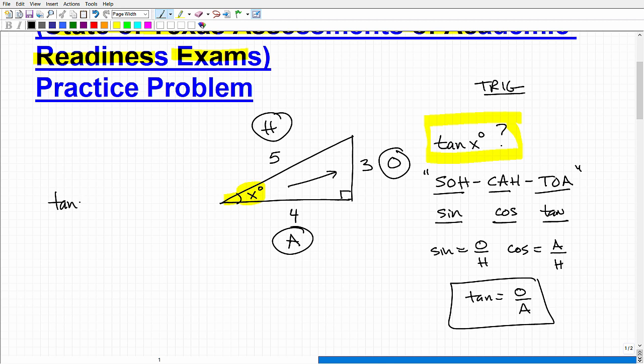Knowing that the tangent, by definition, the tangent of an angle, any angle x degree, is going to be its opposite over adjacent sides, relative to where that angle is located. So the tangent of angle x in this situation is going to be what?